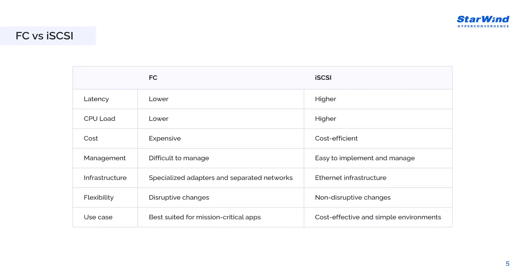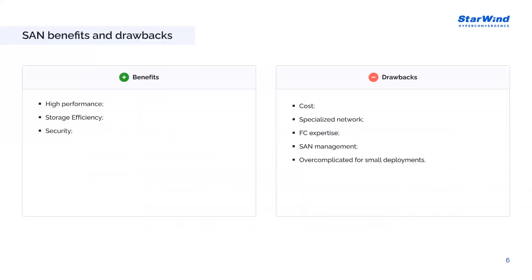iSCSI SANs are typically less expensive with lower maintenance costs, utilizing standard network routers, adapters, and switches — no need for specific hardware like Fiber Channel adapters. iSCSI is a popular choice for small and medium-sized businesses that value simplicity and affordability. However, iSCSI SANs operate within a mixed network environment, sharing the ethernet network with other workloads, which can result in higher latency compared to the dedicated network of Fiber Channel. This makes iSCSI less suitable for mission-critical tier-zero workloads that require minimal latency.